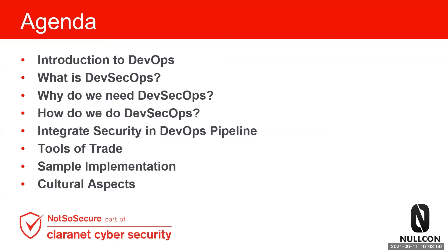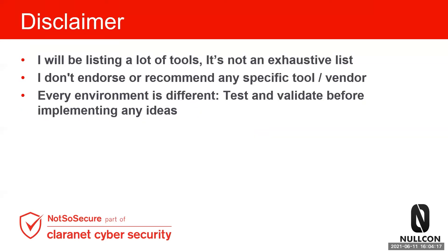So what we're going to do is first go through what DevOps is, then talk about what DevSecOps is, why we need it, and how we implement it. We'll also talk about how security can be integrated into DevOps pipelines, cover some tools, and see a few sample implementations. Towards the end, we'll discuss the cultural aspects. I'll be listing quite a lot of tools — it's not an exhaustive list. I do not endorse any of these tools. If you wish to implement them, test in your test environments first before going to production.